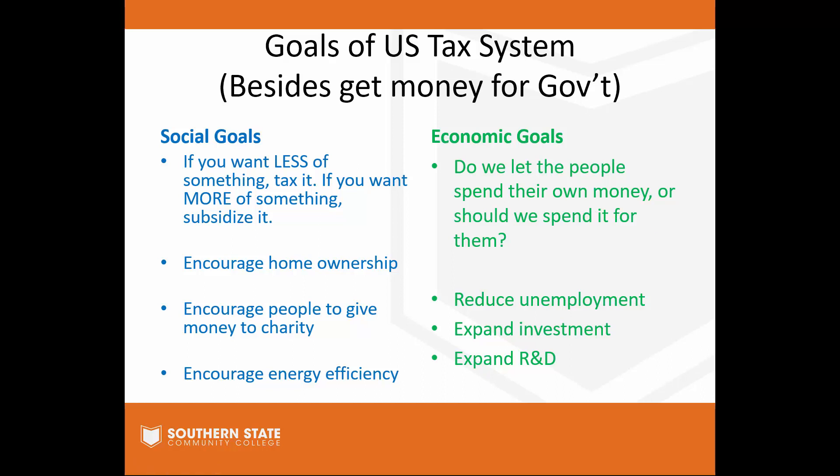The flip side might be economic goals. The government will sometimes use the tax code to achieve certain economic goals — like reducing unemployment, expanding business investment by giving businesses a tax break when they buy property, or encouraging research and development with a tax break for R&D. There's a blurred line between social and economic goals, but the idea is the US tax system isn't just to get as much money for the government as possible — it's also to build in things that help us achieve certain goals as a society.